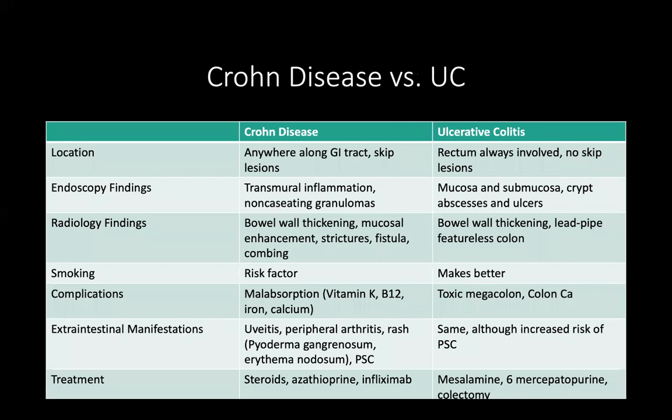This chart helps differentiate Crohn's disease and ulcerative colitis. In terms of location, Crohn's disease can happen anywhere along the GI tract from the mouth to the anus, but there are skip lesions — it may affect part of the small bowel and part of the large bowel, but not continuously. In ulcerative colitis, there are no skip lesions. The rectum is nearly always involved in UC, whereas the rectum is only involved in 10% of Crohn's disease cases.